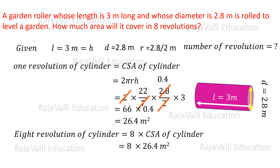So multiplying this value by 8, we get 211.2 meter square. This is the answer. Thank you.